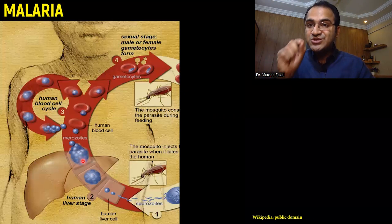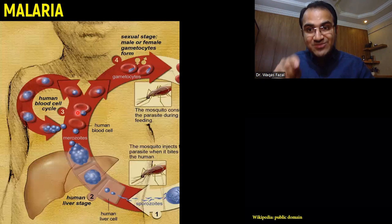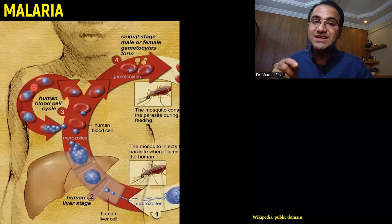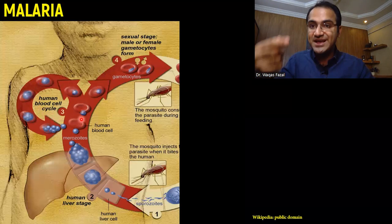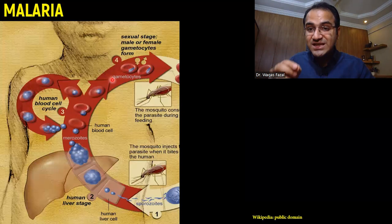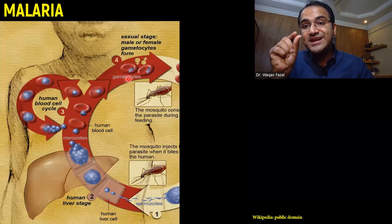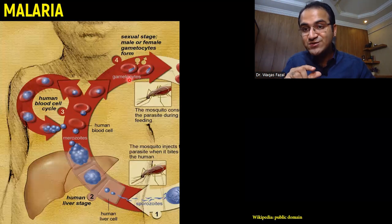These merozoites are released from the liver and spread into the blood. They then infect human red blood cells and proliferate again and again within the RBCs. When they proliferate, they lead to the rupture of red blood cells, causing hemolysis. Within these red blood cells they also form male and female gametocytes.